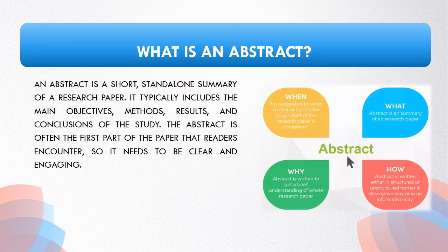An abstract serves as a brief, stand-alone summary of a research paper, encompassing its main objectives, methods, results, and conclusions. Positioned at the beginning of the paper, it serves as a crucial point of entry for readers, necessitating clarity and engagement to capture their interest effectively. A well-crafted abstract provides a concise overview of the study's significance and findings, guiding readers toward deeper engagement with the full paper.